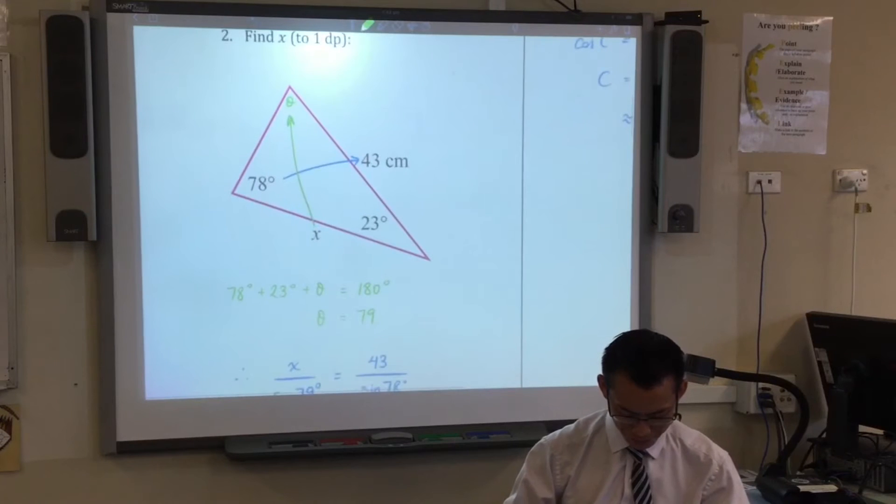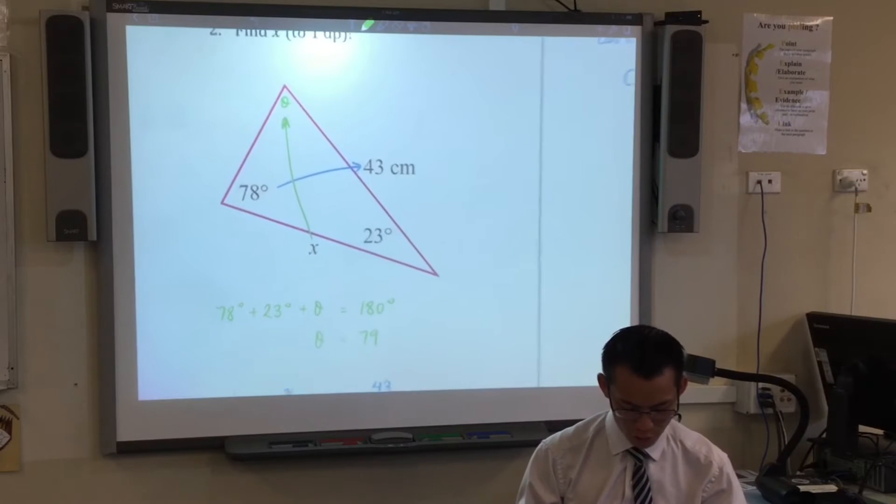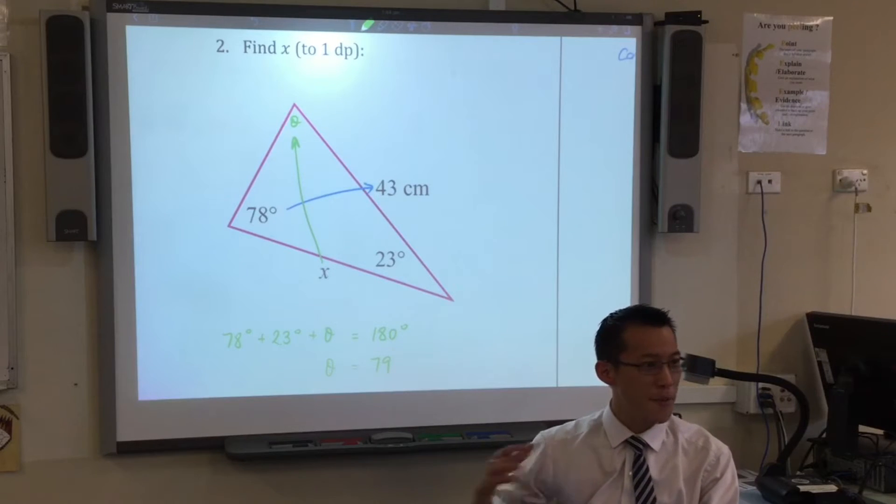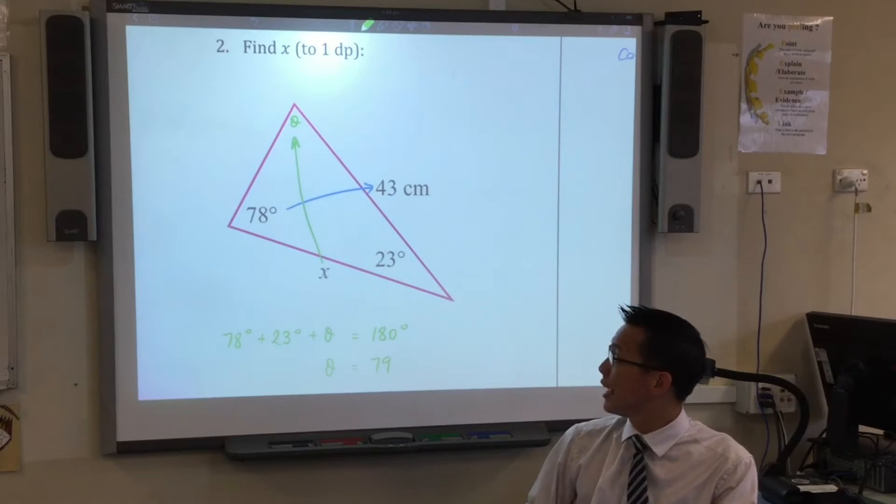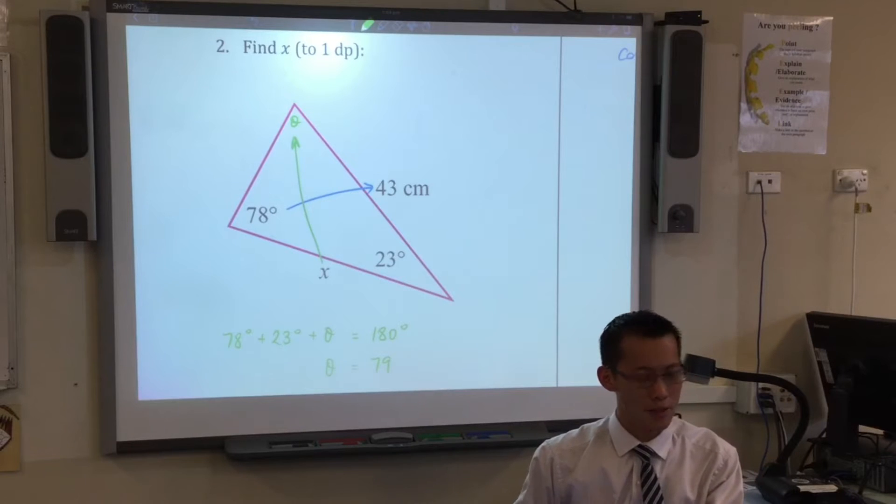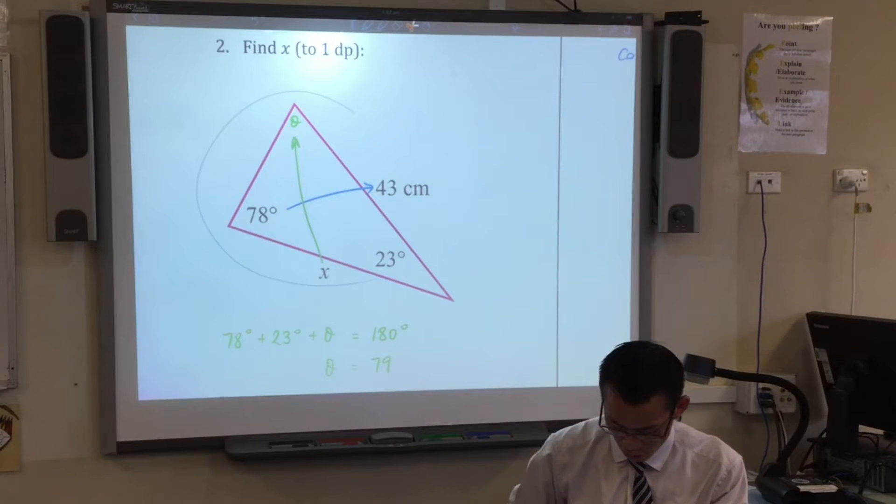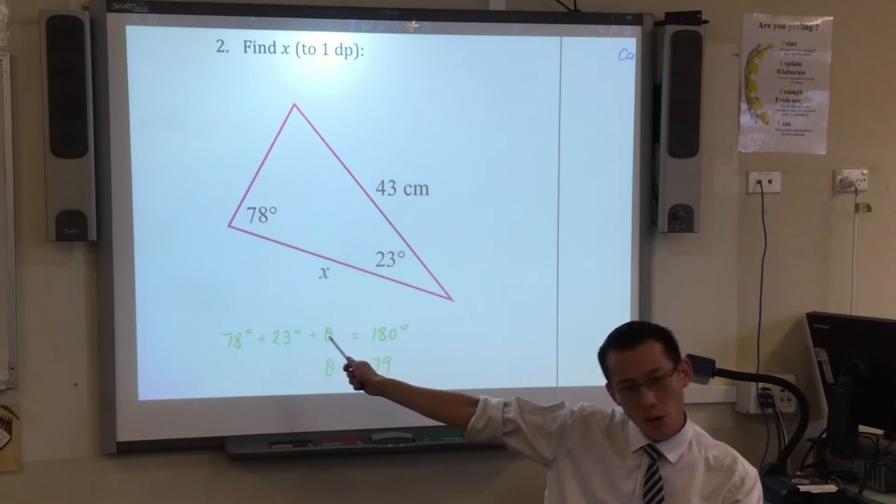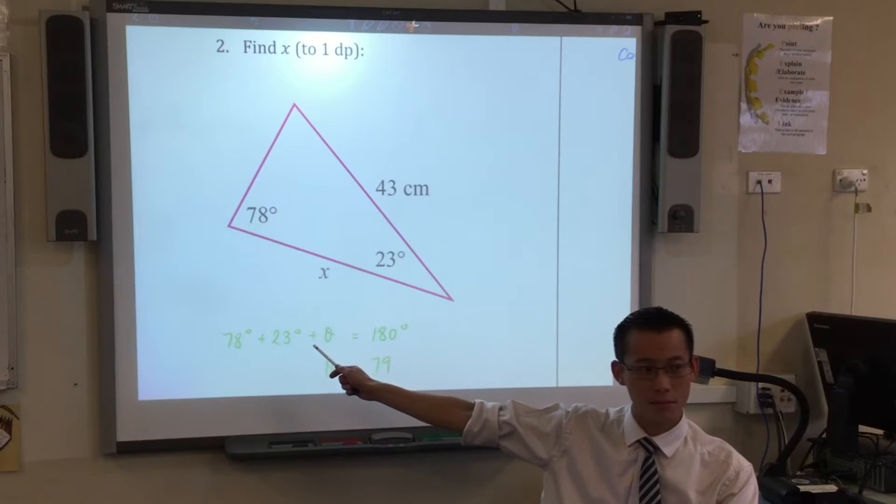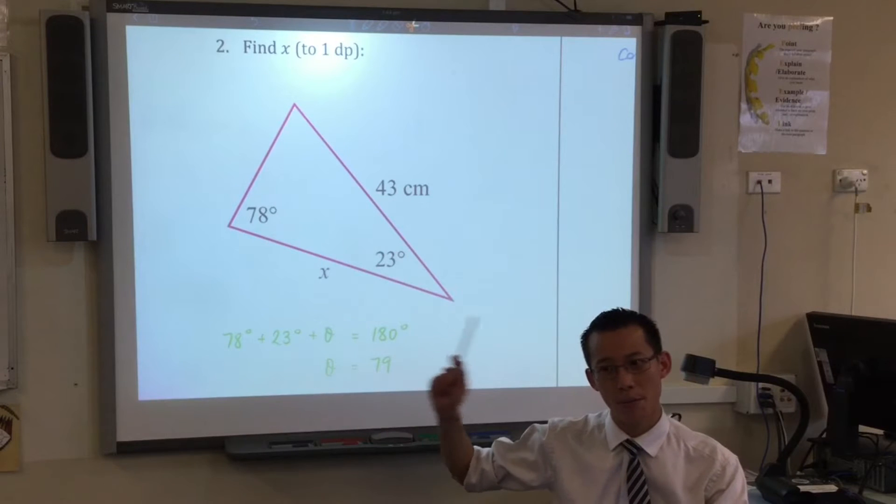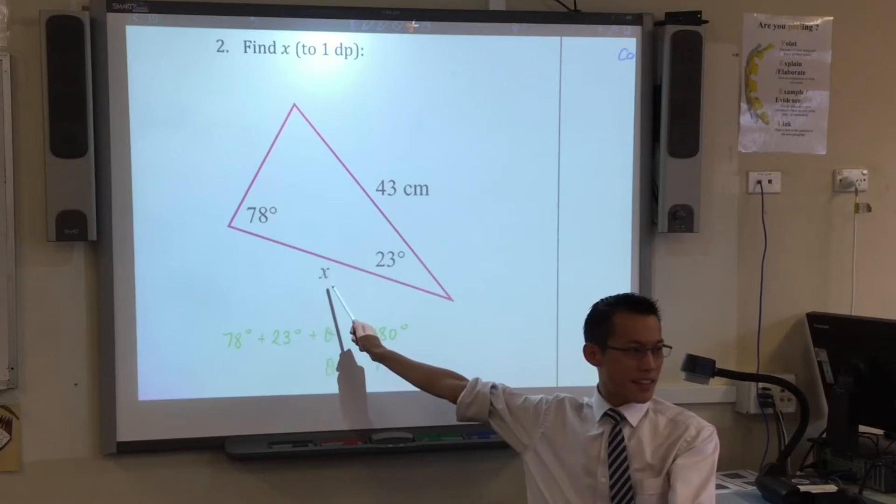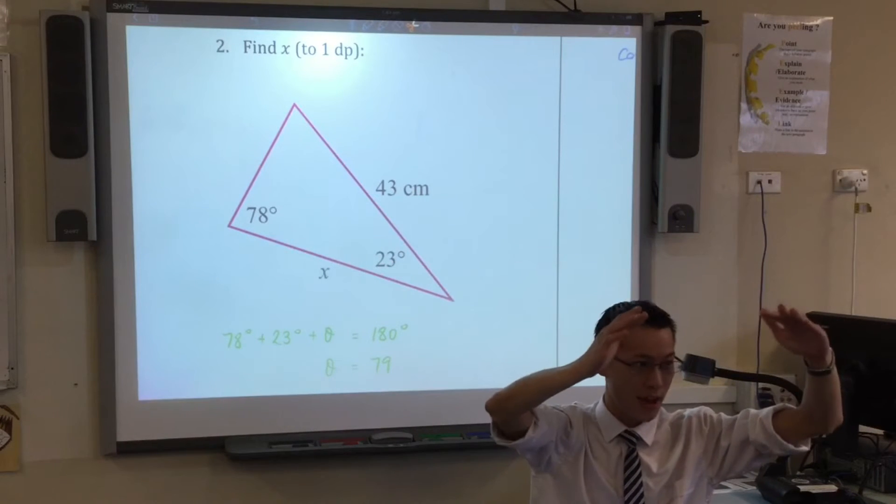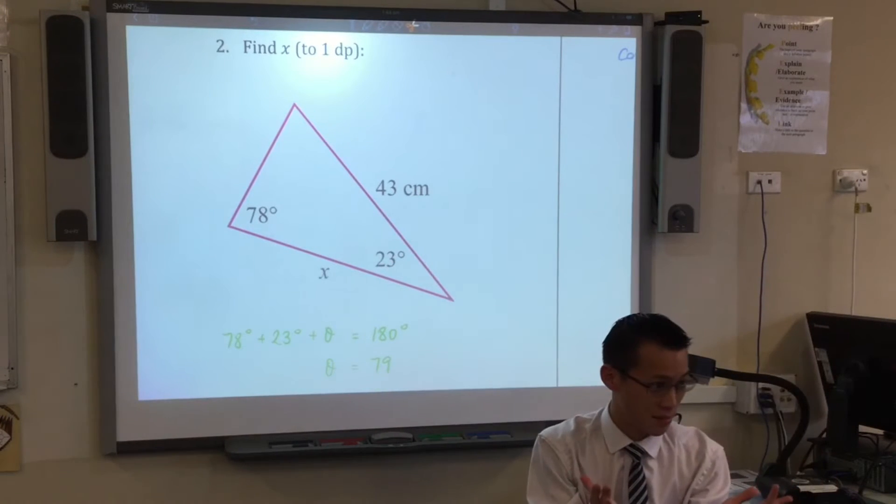Question two, this was the first curveball. So it says find x, now you can see that the information you've been given isn't really quite enough in its current form. This is what the question looks like when you first met it. Can you use cosine rule on this? You can't use cosine rule because if you wanted to find out this side, you need the opposite angle and the other two sides and you're kind of stuck, right?